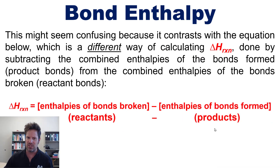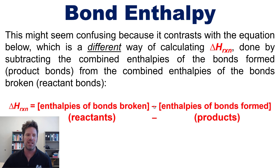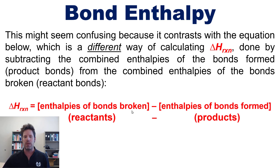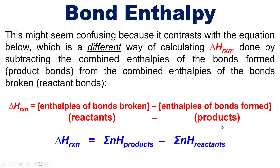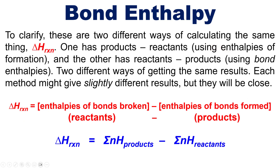It might be confusing because it contrasts with the bond enthalpy equation I just showed you, which has reactants minus products. But why the contradiction? It's not actually a contradiction. The bond enthalpy equation calculates reaction enthalpy by subtracting the combined enthalpies of bonds formed — product bonds — from those of bonds broken — reactant bonds. So the bond enthalpy approach is reactants minus products. This contrasts with the enthalpy of formation approach, which has products minus reactants. These are simply two different ways of calculating the exact same thing: reaction enthalpy.